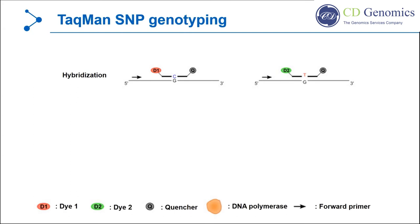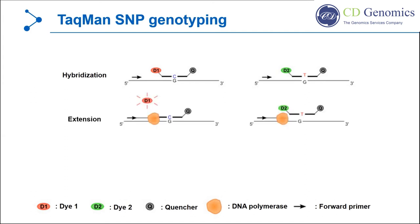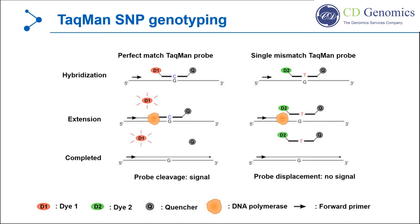A 5' end reporter dye and a 3' end quencher dye are covalently linked to the probes. When the probes are intact, fluorescence is suppressed. During PCR extension, exonuclease activity happens only on the perfectly matched probes. The reporter and quencher dyes are then released due to the exonuclease activity. The fluorescent signal is measured to determine the genotype of the sample.